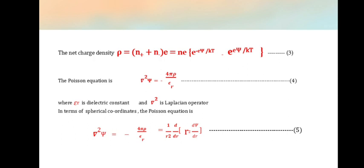R is nothing but the distance from the central ion.